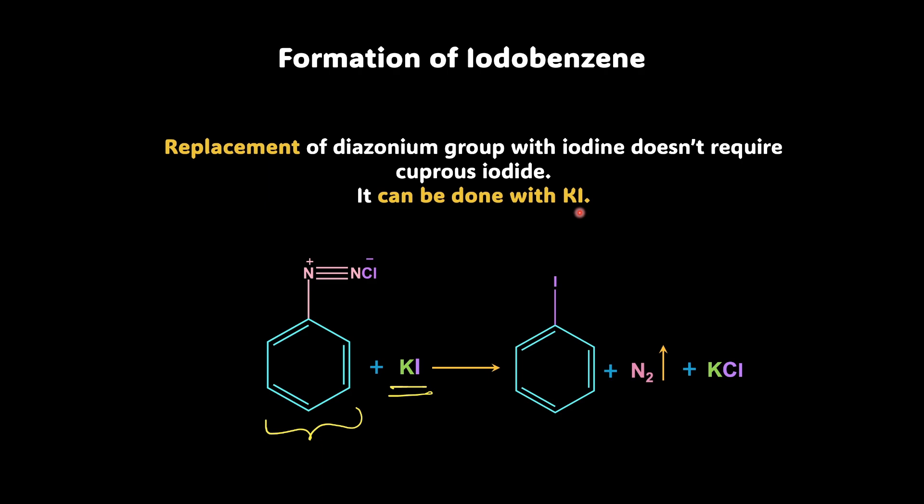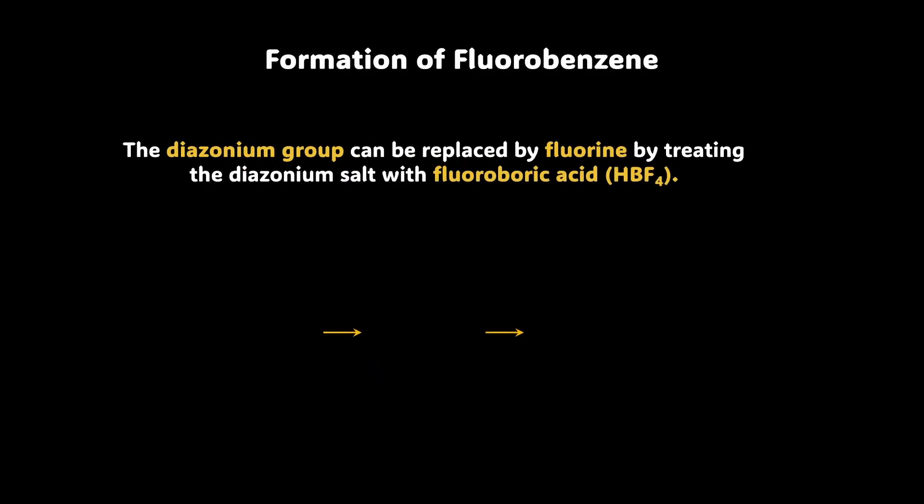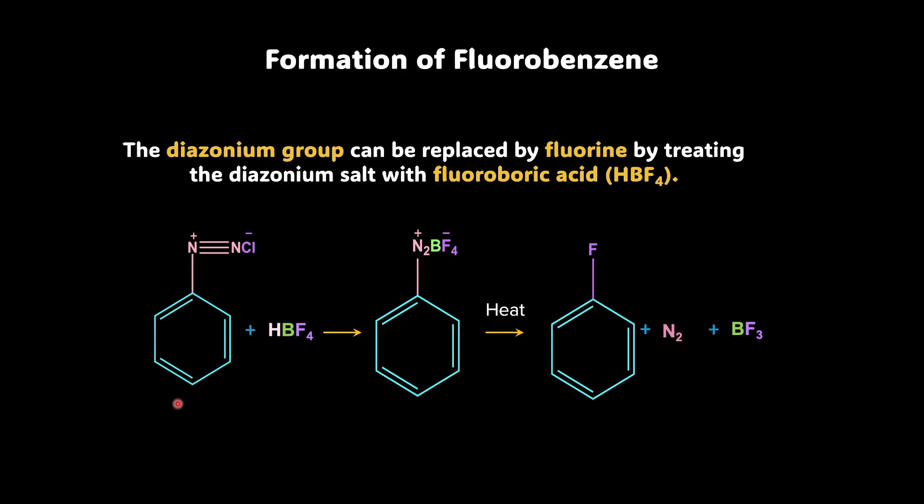And we should not call this reaction as Sandmeyer reaction. We're going to call it Sandmeyer reaction only when we have cuprous chloride or cuprous bromide, not with potassium iodide. What about the other one? How can we prepare fluorobenzene? Well, we have another very interesting named reaction coming up which is this one, Balz-Schiemann reaction in which what we do is, we again start with benzene diazonium chloride and to it, we add HBF4. This HBF4 is called fluoroboric acid.